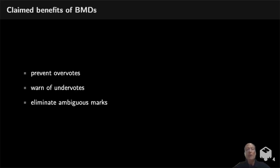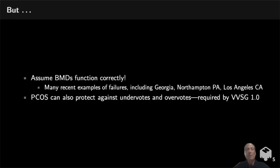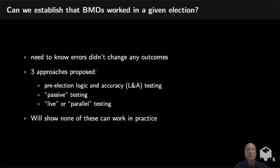A number of proponents of BMDs claim benefits such as preventing overvotes, warning about undervotes, and eliminating the possibility of ambiguous marks. There are problems with those arguments - in particular, they assume that ballot marking devices function correctly, and there are many recent examples of failures on a wide scale, including in Georgia, Northampton Pennsylvania, and Los Angeles. Precinct count optical scan systems can also protect against overvotes and undervotes; in fact, that's required under VVSG 1.0.